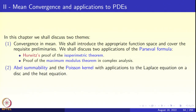First we shall discuss what convergence in mean is. We shall introduce the appropriate function spaces and cover the requisite preliminaries. We shall discuss two applications of the Parseval formula — the most important formula derived in this chapter. As an application, we shall give Hurwitz's proof of a classical result in geometry called the isoperimetric theorem. We shall prove the maximum modulus theorem in complex analysis via the Parseval formula. Then we will take up Abel summability and the Poisson kernel, with applications to solving Laplace's equation on a disk and the heat equation.